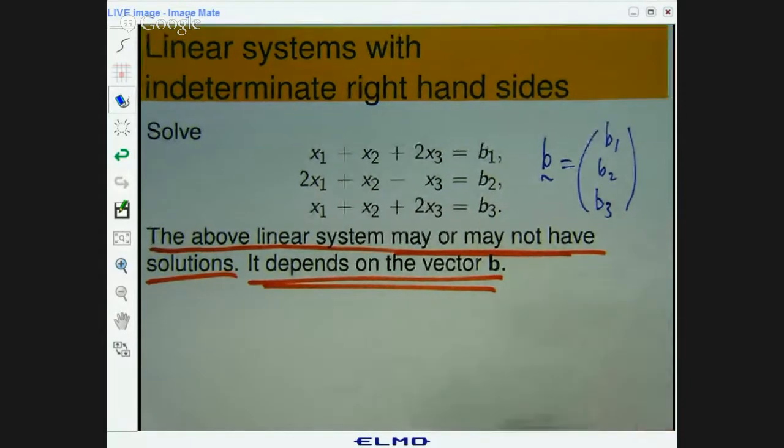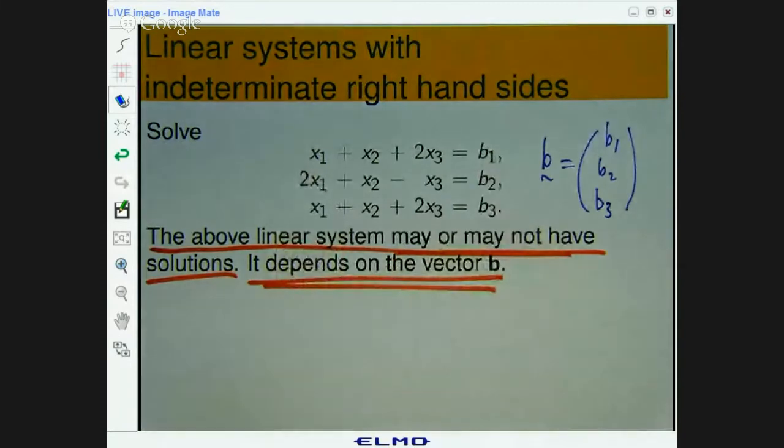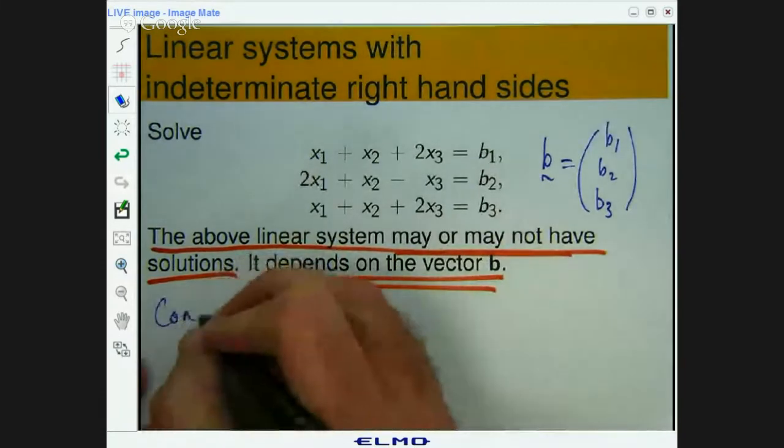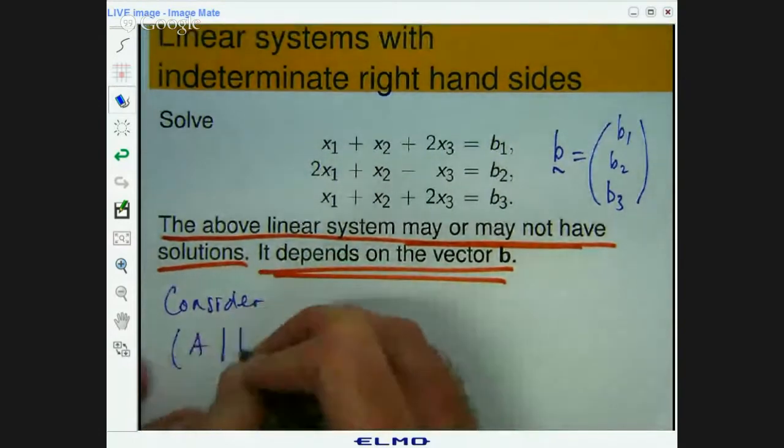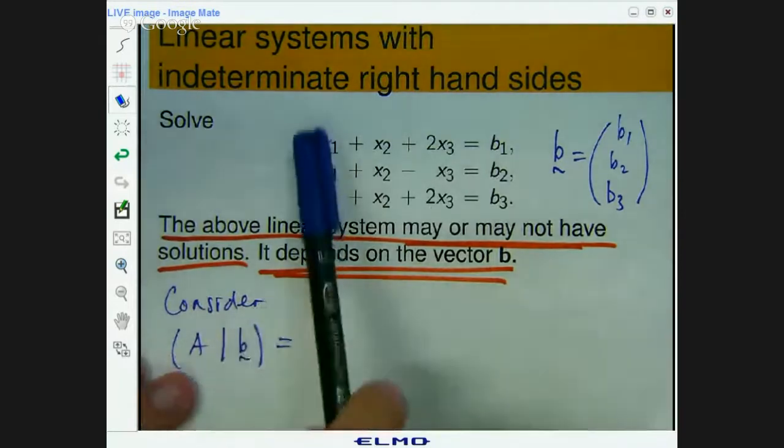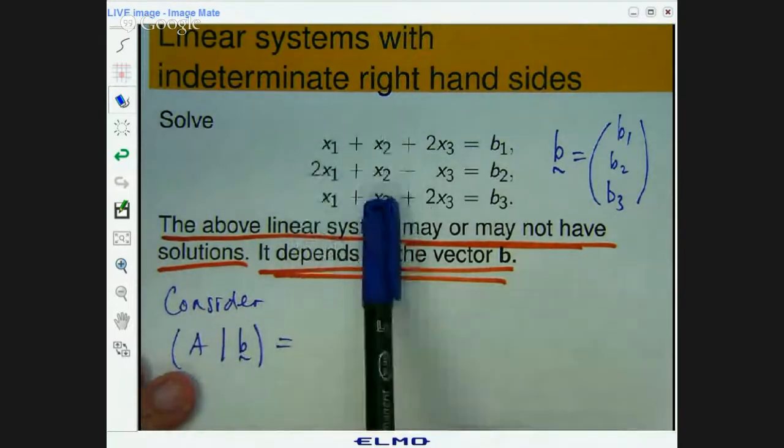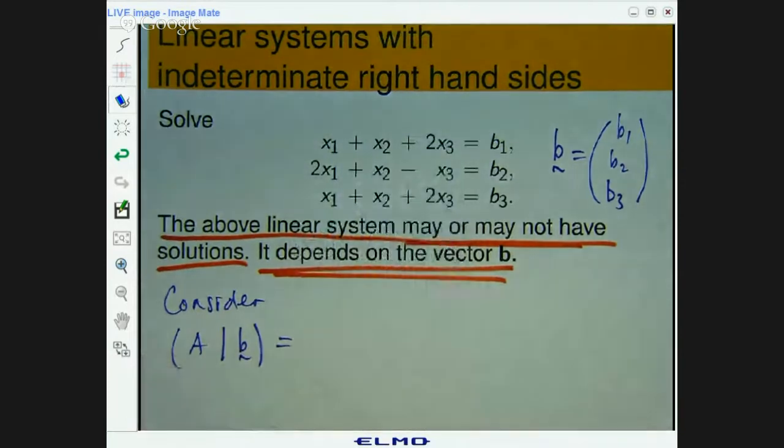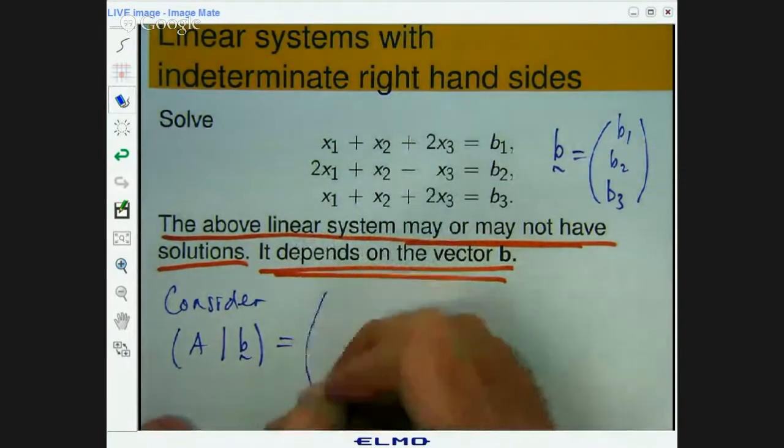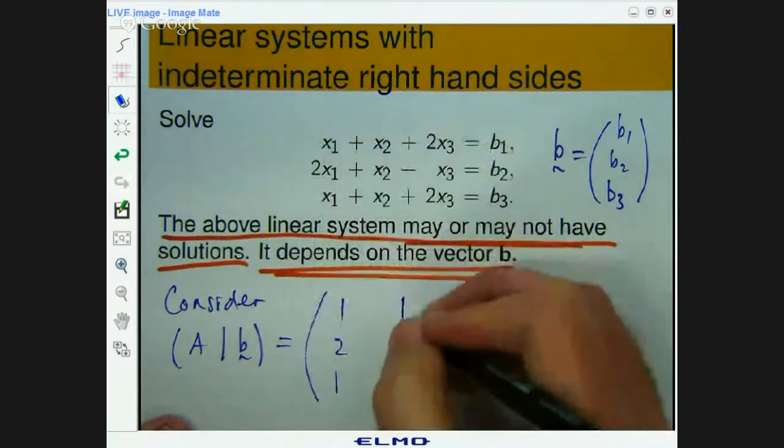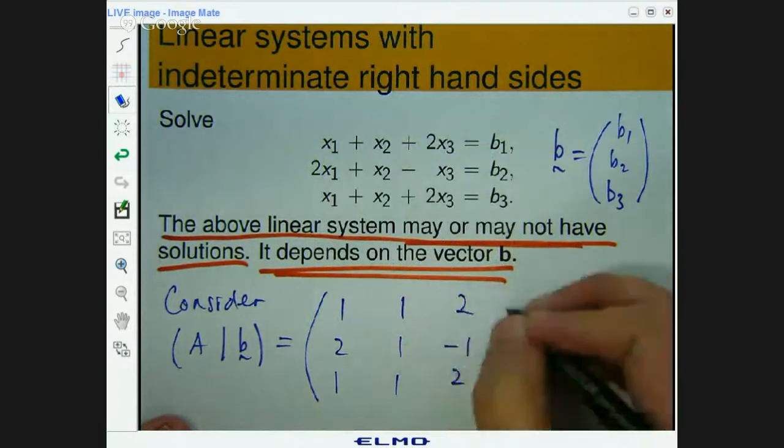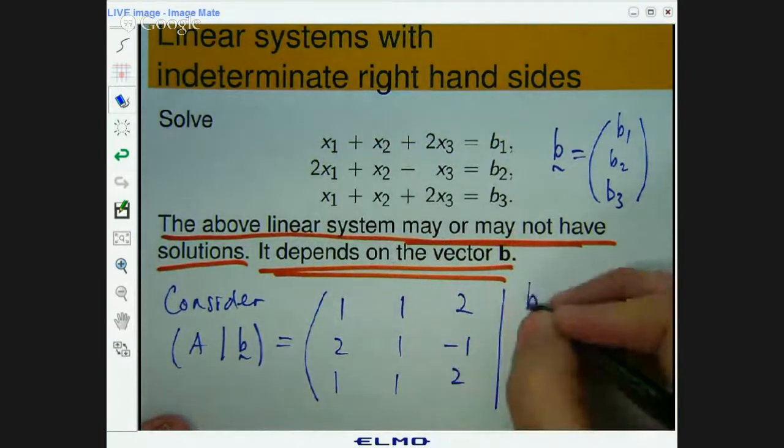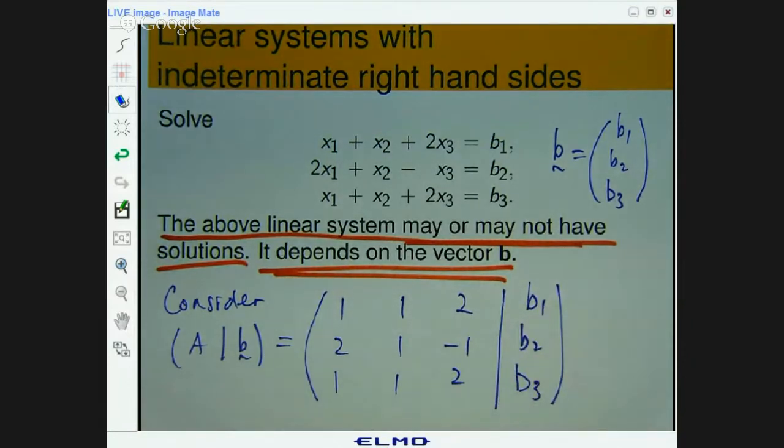So for some values it will have solutions, for some it won't. So let's delve into this deeper and see what we can come up with. Now let's write this as an augmented matrix. So we take the coefficients of x1 and write them as a vector, x2 write them as a vector, x3 write them as a vector and form a matrix. So 1, 2, 1, 1, 1, 1, 2, negative 1, 2. And this sort of plays the role of an equal sign. And you don't know what b1 and b2 and b3 are, so they are just arbitrary at the moment.